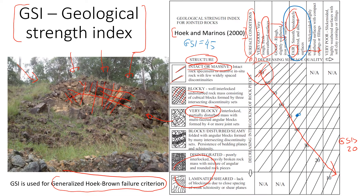Usually we give a range, so we give plus or minus five. Another thing worth mentioning is that GSI is a little bit subjective — it depends on how you assess it. Different researchers or engineers would look at it slightly differently, and when they assess surface conditions or structure, the assessment can also vary, but not by that much. For that reason we give a range. If I were here to investigate the GSI of this rock mass, I would probably come up with a value of 45 plus or minus five.